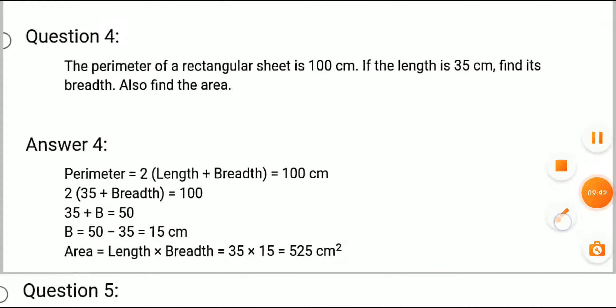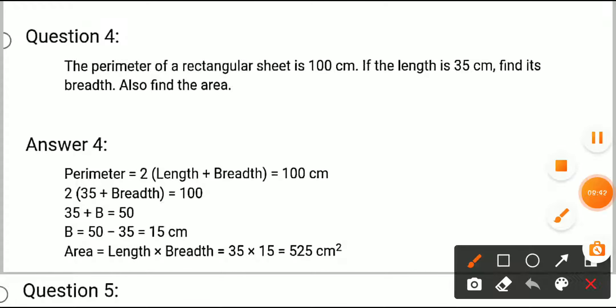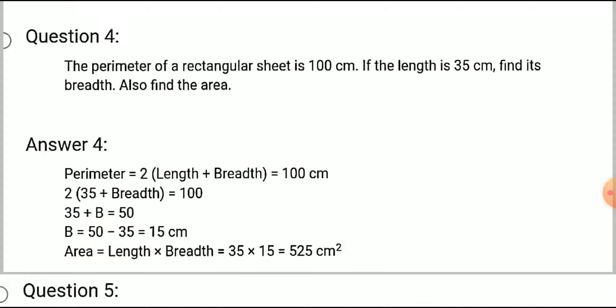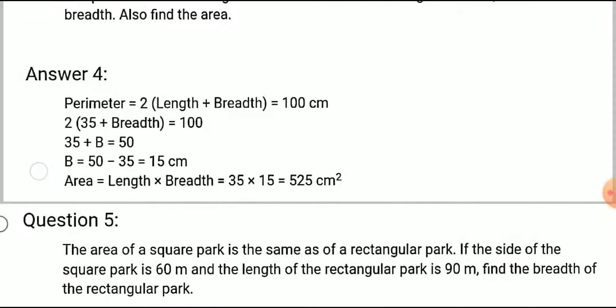Write this in your copy. If you have doubt about why I have written 2 here, the 2 comes in the denominator place in the next step.